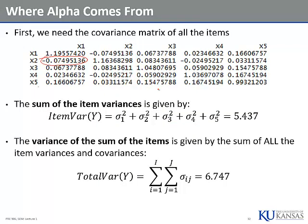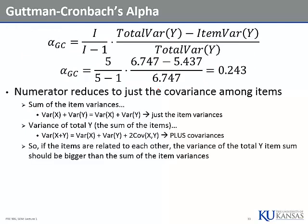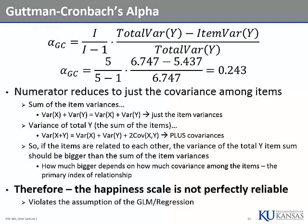Cronbach's Alpha formula is based on the covariance matrix. Our Cronbach's Alpha for our data is 0.24. Is that a good reliability? No — that's terrible. That's like all-time bad. Horrific.